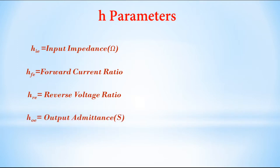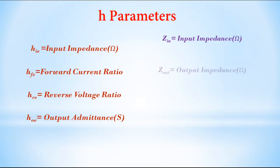HOE is called output admittance. It is the inverse of resistance, therefore it is measured in Siemens. Now let us look at the parameters of the transistor. They are Zin — input impedance, measured in ohms — and Zout — output impedance, also measured in ohms.